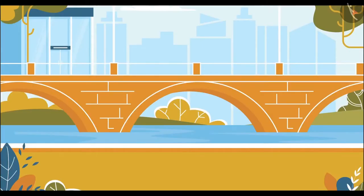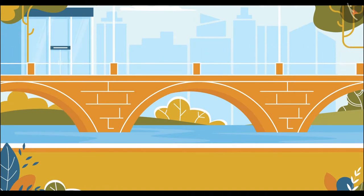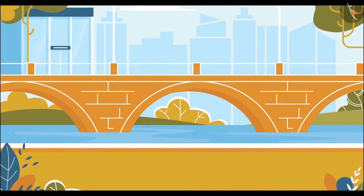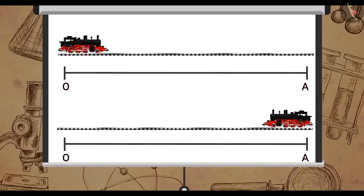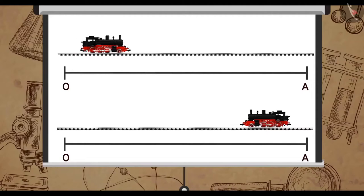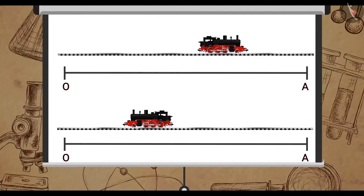We have studied earlier that a body accelerates when there is a change in its velocity. There can be two reasons for the change in velocity of an object: a change in the magnitude of velocity, or a change in the direction of velocity.